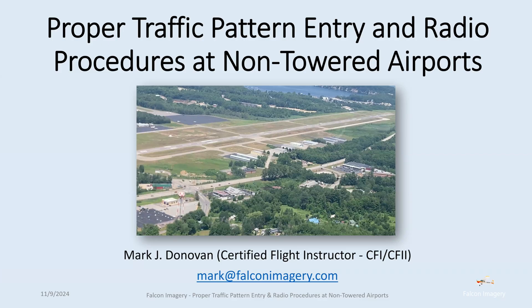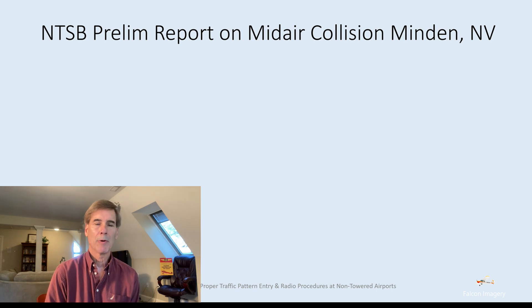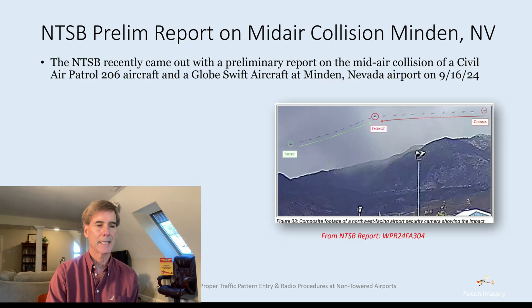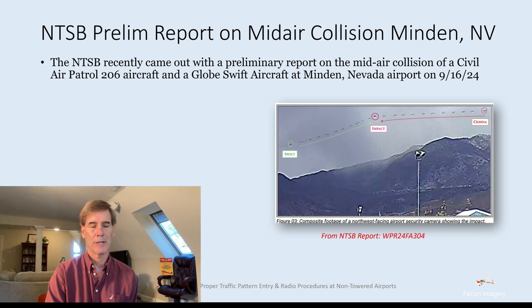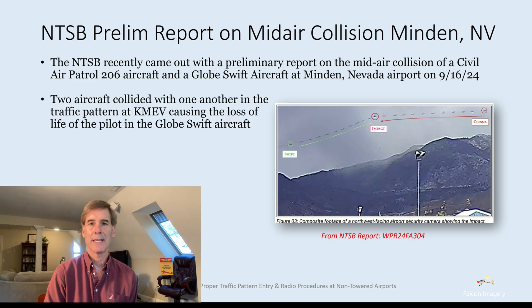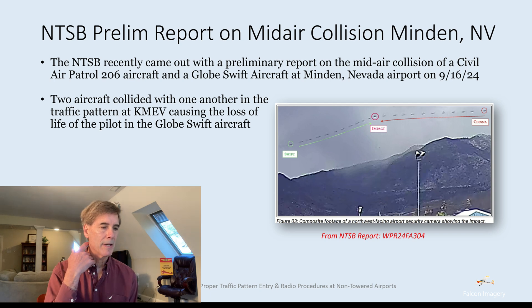Hi, Mark Donovan here, and today I'm going to go over proper traffic pattern entries and radio procedures at non-towered airports. Sadly, the NTSB preliminary report came out on the mid-air collision in Minden, Nevada back on September 16th of 2024. It involved a Civil Air Patrol aircraft, a 206, and a Globe Swift aircraft. They collided in the traffic pattern, and unfortunately there was a loss of life for the pilot in the Globe Swift aircraft.